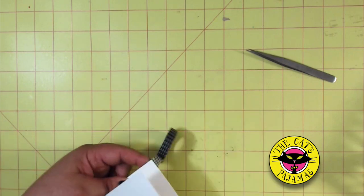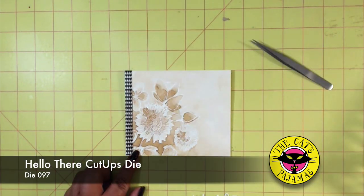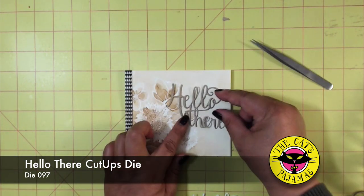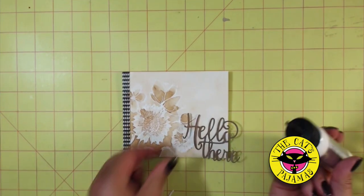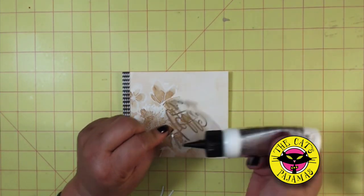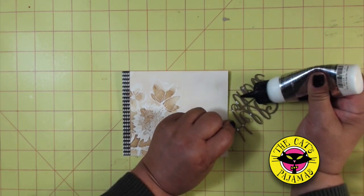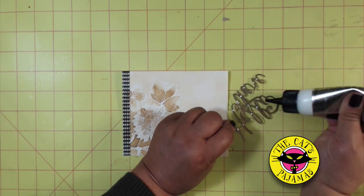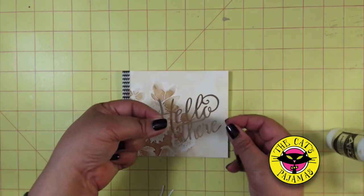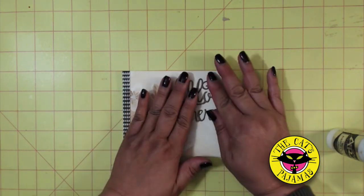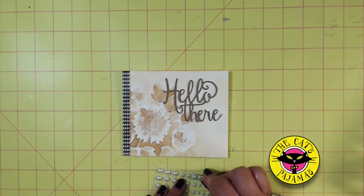Now I'll just add a bit of washi tape along the edge. And I wasn't sure what color paper I should cut the hello there, so I'm auditioning a couple of different colors. And I think I like this dark coffee color. And I'll attach it with some Dries Clear glue, and it also dries fast, which is something I really like. I think as a finishing touch, I'll add a couple of pearls to mimic the white embossing powder.